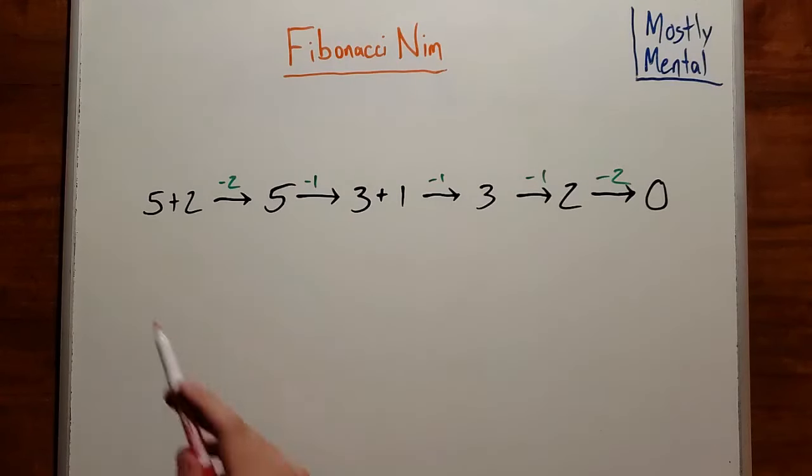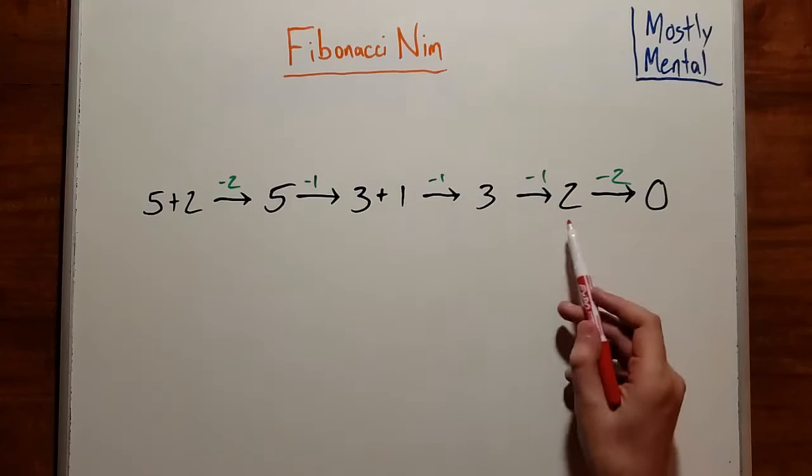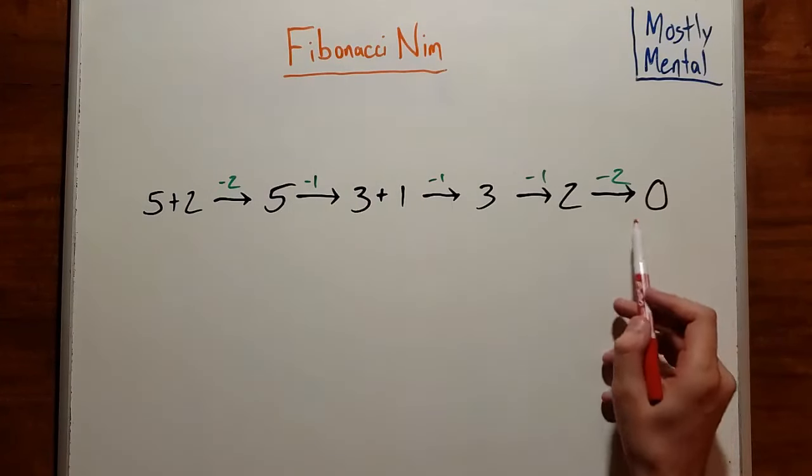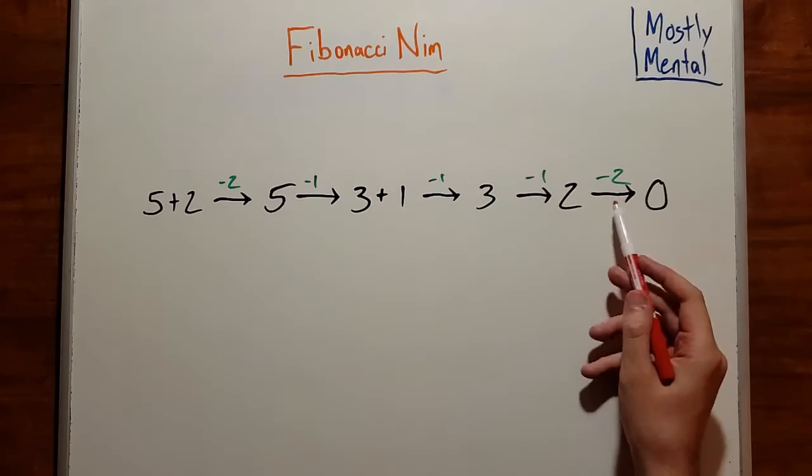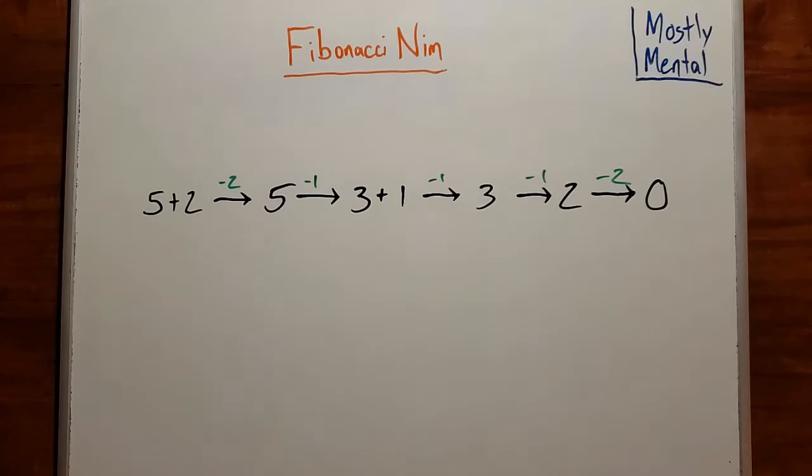Finally, why does this back-and-forth with the Zeckendorf terms give us the win? Notice that the final move, when the pile size becomes zero, must involve removing all of the terms from the Zeckendorf representation. In particular, that means removing the smallest term. And we've shown that the opponent's move can never remove the smallest term. So we must be the ones to make that winning move.